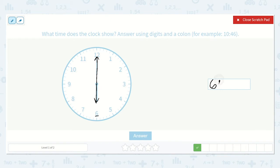And then remember, no minutes have passed in this new hour, so I'm going to write zero, zero. 6 o'clock.